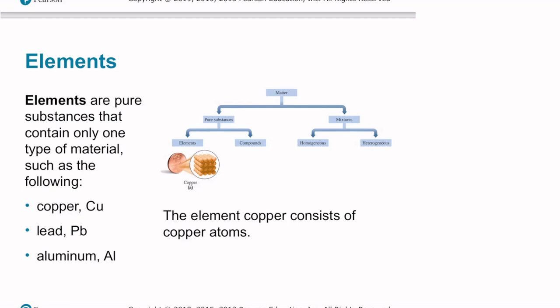Let's revisit our chart. We see here that matter can be separated into two broad categories: pure substances or mixtures. Among those pure substances, we have two subcategories: elements and compounds. Elements are pure substances that contain only one type of material, such as the following: copper, lead, and aluminum.